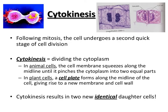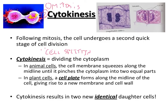Also part of M phase, alongside mitosis, is cytokinesis — the division of the cytoplasm, essentially cell splitting. In animal cells, the cell membrane literally pinches or squeezes together at the midline until the cytoplasm is divided off into two equal parts. This pinching is called a cleavage furrow when seen under the microscope.